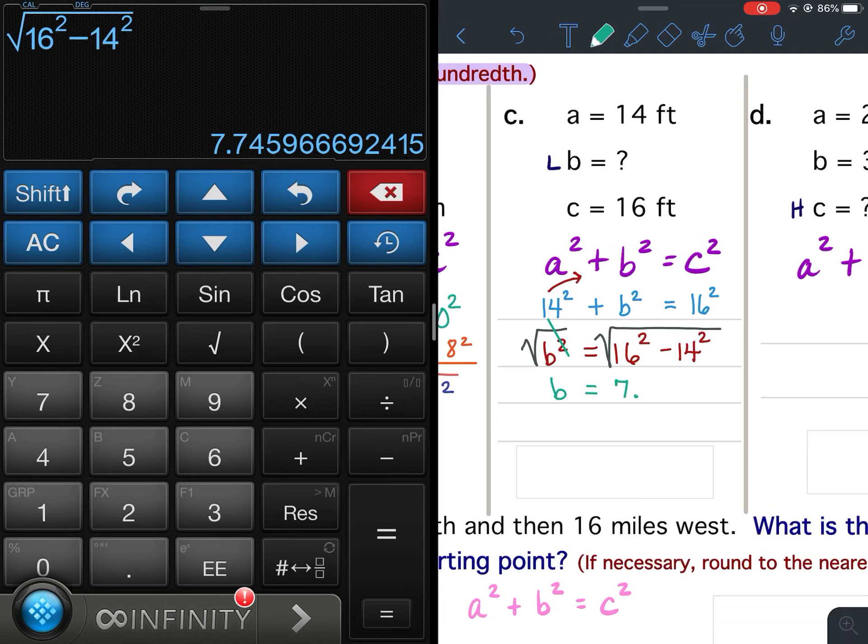So b equals 7.7459. And then don't forget the ellipsis at the end.